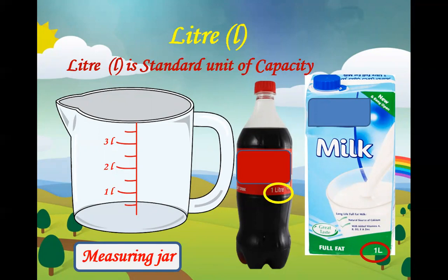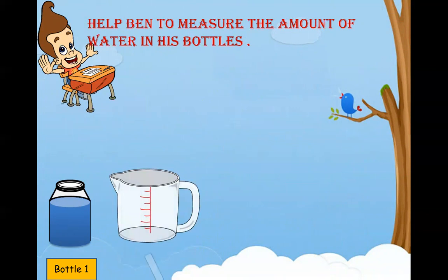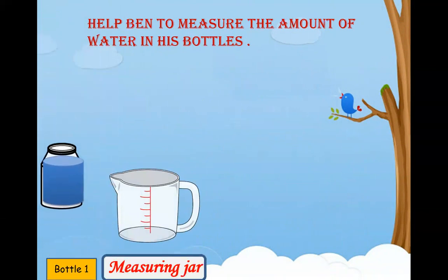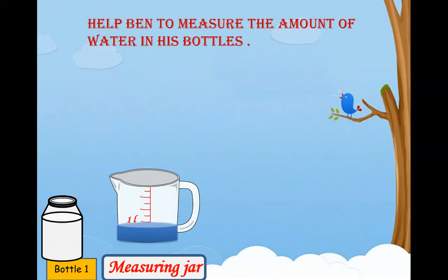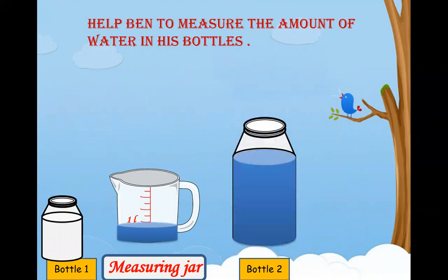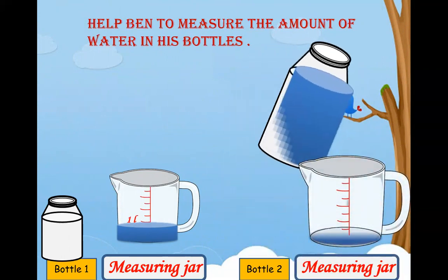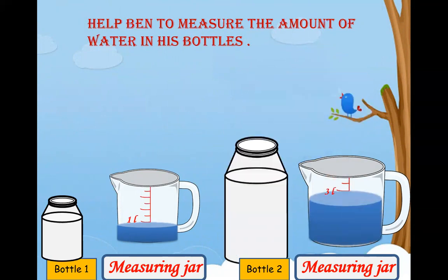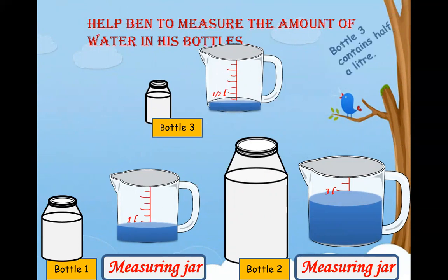Now help Ben measure the amount of water in his bottles. Bottle one: taking the measuring jar, we pour bottle one into the measuring jar — that is one liter. Bottle two: we pour the water into the measuring jar — it reaches three liters. Now bottle three: it is at the small line, so it is half a liter.